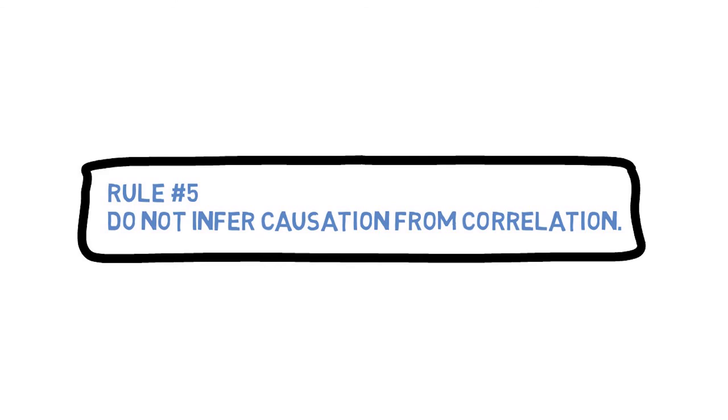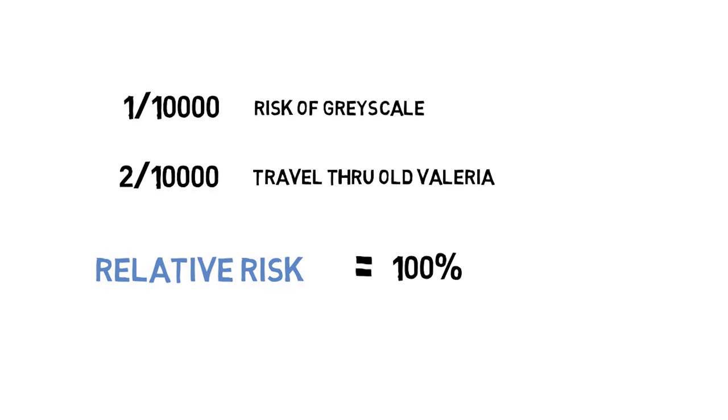How to statisticulate. Let's introduce the concept of absolute risk versus relative risk. Suppose 1 in 10,000 will develop a skin disorder called grayscale, which is my throwback to Game of Thrones. And that some environmental factor, such as traveling through Old Valyria, increases the risk to 2 in 10,000. When we introduce that environmental factor, the relative risk is 100%, or it's doubled.